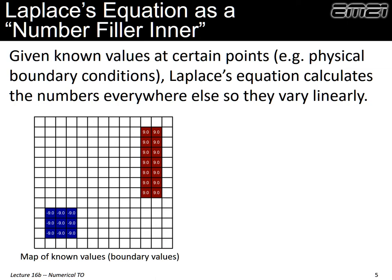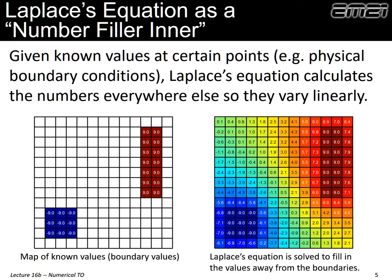When we do that, we get an answer where we still have those regions of negative nine and positive nine at the same positions, but we've filled in all the other numbers in a way that makes them vary linearly. So in this sense, Laplace's equation is a number filler inner.